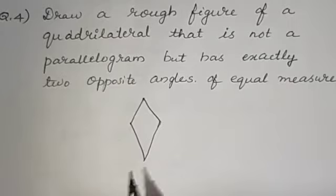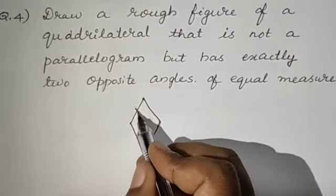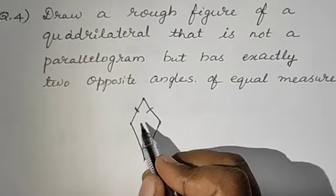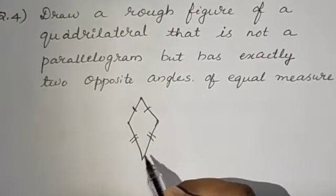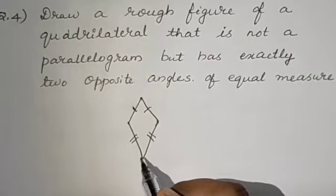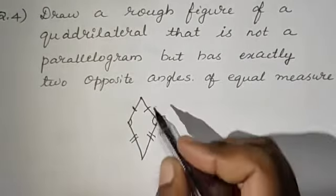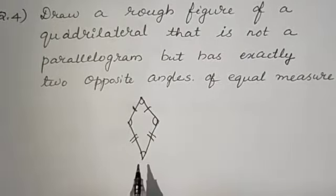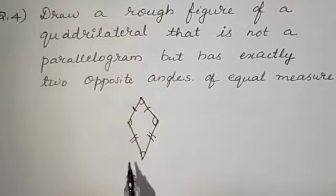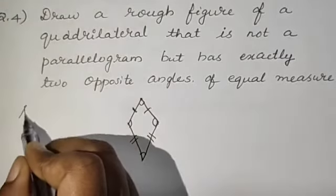In a kite, this is a quadrilateral. It is not a parallelogram, but for a kite the consecutive sides are equal — these two sides are equal and these two sides are equal. If the sides are equal, the angles should be equal; that is, these opposite angles are equal. So this is the figure of a quadrilateral that is not a parallelogram but has exactly two opposite angles of equal measure.